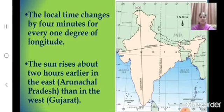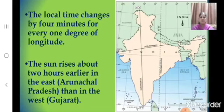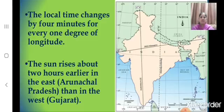The local time changes by 4 minutes for every 1 degree of longitude. The sun rises about 2 hours earlier in the east, that is in Arunachal Pradesh, than in the west, that is in Gujarat. Due to the great longitudinal extent, the sun rises about 2 hours earlier in Arunachal Pradesh than in Gujarat.